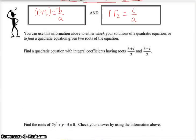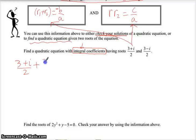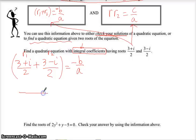Why would you use this? We might use this to check our solutions of a quadratic equation, or to define the equation given the two roots. So let's find a quadratic equation with integral coefficients having roots (3 plus i) divided by 2 and (3 minus i) divided by 2. According to the sum rule, if we add the two roots — they have a common denominator of 2 — we do 3 plus i plus 3 minus i. The i's cancel, and 3 plus 3 is 6. So that's 6 divided by 2. I'll leave it like that for now.